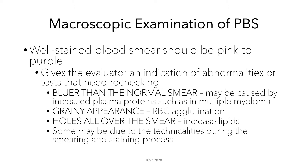Let's go into more detail about the macroscopic examination of peripheral blood smears. Your stain should be pink to purple, and the color of your stain can give the evaluator an indication of any abnormalities that may be present or tests that need rechecking. For example, if you notice that your stain is bluer than normal, this may be caused by an increase in plasma proteins due to diseases such as multiple myeloma. A grainy appearance could mean increased RBC agglutination, and if you see holes all over the smear, this may be caused by increased lipids.